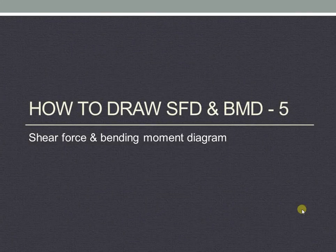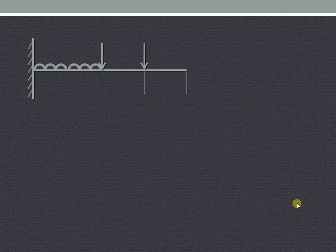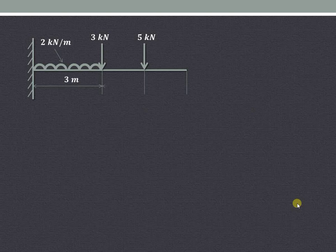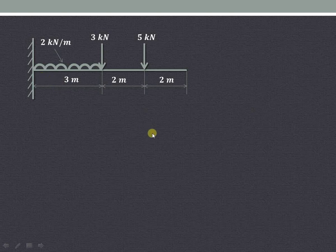In this video, we will try to understand how to draw a shear force and bending moment diagram in case of a cantilever beam carrying point load and uniformly distributed load. As shown in the figure, the cantilever beam is carrying point loads of 3KN and 5KN, and a UDL of 2KN per meter for 3 meter length from the fixed end of the cantilever.